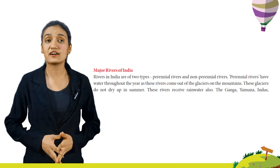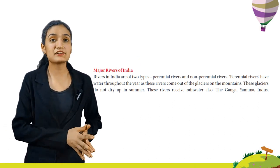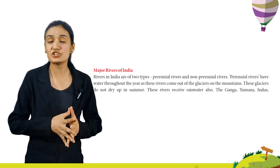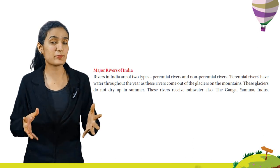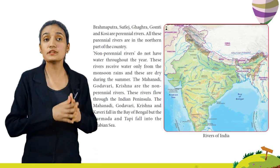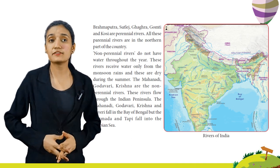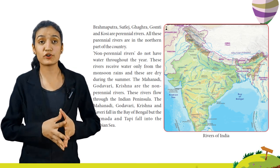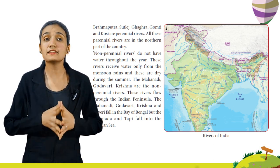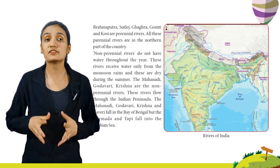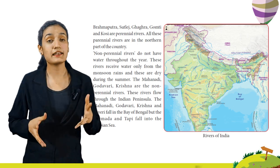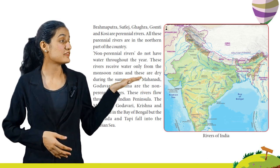Major rivers of India: Rivers in India are of two types — perennial rivers and non-perennial rivers. Perennial rivers have water throughout the year as they come from glaciers on the mountains that do not dry up in summer, and these rivers also receive rainwater. The Ganga, Yamuna, Indus, Brahmaputra, Satlaj, Ghagra, Gomti and Kosi are perennial rivers, all in the northern part of the country. Non-perennial rivers do not have water throughout the year — they receive water only from monsoon rains and are dry in summer. The Mahanadi, Godavari, Krishna and Kaveri fall into the Bay of Bengal, while the Narmada and Tapi fall into the Arabian Sea.